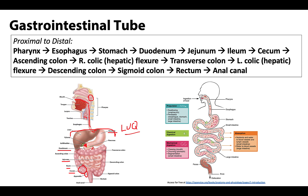The cecum is continuous with the ascending colon, doing exactly what its name suggests — ascending. It will make a sharp left and medial turn at the right colic or hepatic flexure, which has everything to do with its close association with the liver. The large intestine continues transversely as the transverse colon, then makes a sharp turn inferiorly at the left colic flexure or splenic flexure, named due to its close relationship to the spleen. We then have the descending colon that transitions into the sigmoid colon, named due to its distinct S-shaped bends, though there is considerable variation.